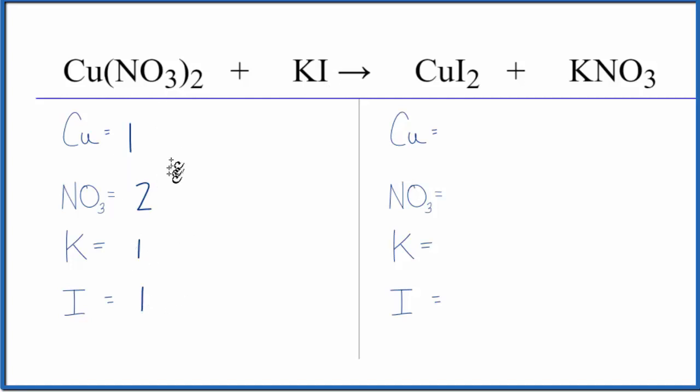See how that's much neater. On the product side we have one copper, we have one nitrate, one potassium, and two iodine atoms.